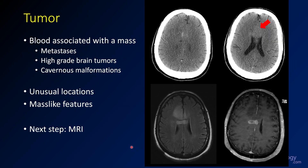Next, tumor. If you see mass effect out of proportion to the extent of hemorrhage, consider whether there's an underlying mass. In this patient the non-contrast CT shows a little hemorrhage along the anterior cingulate, but there's a larger region of expansion crossing the midline. On MRI FLAIR there's expansion of the cingulate crossing the corpus callosum, and there's an abnormal area of enhancement in the corpus callosum — this turned out to be a high-grade glioma. Anytime you see associated mass effect, think about metastasis, high-grade tumor, or cavernous malformation. These patients will frequently require MRI to determine the cause.